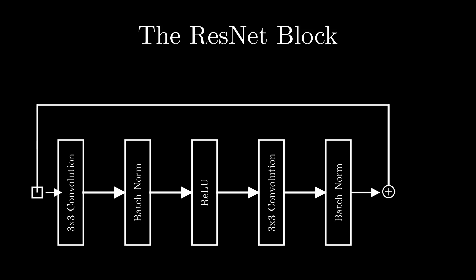We do this element-wise as our inputs and features share the same dimensionality — this is only because we have carefully chosen our convolutional parameters. However, for tasks such as image classification, we do actually want to reduce our dimensionality throughout the network — more on that in a moment. Finally, we pass our features through a final activation function. And that is essentially it — it really is quite a simple idea.